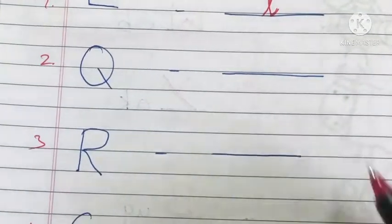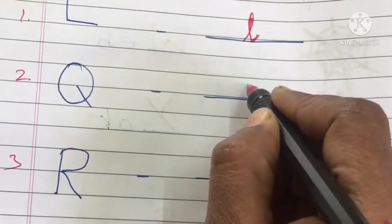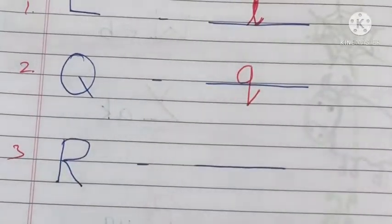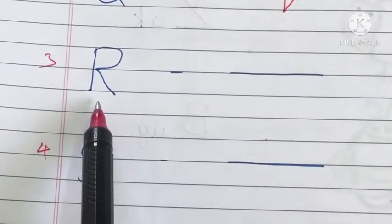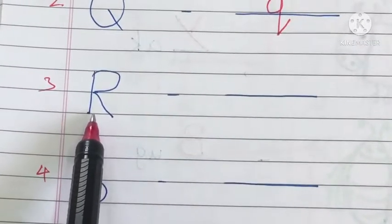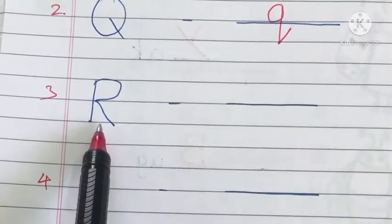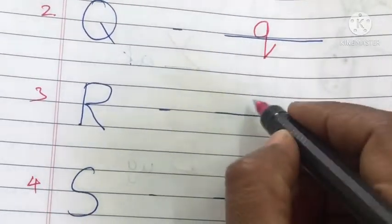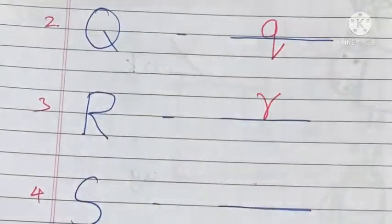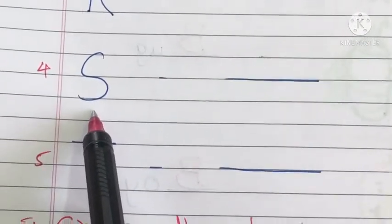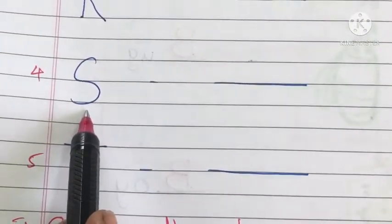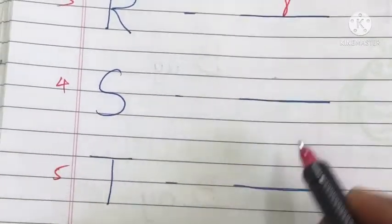See here. What is this? It is the capital letter R. We have to write the small letter R. Write it. See here — what is this letter? It is the capital letter S. We have to write the small letter S.